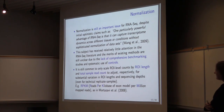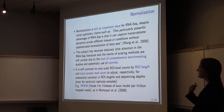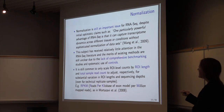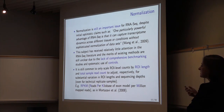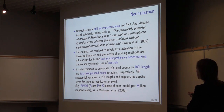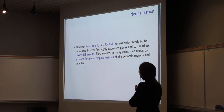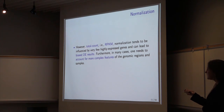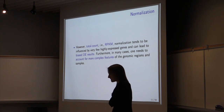This is still a very important issue, despite initial optimistic claims, like in a 2009 paper stating that one powerful advantage of RNA-seq is that it can capture transcriptome dynamics without sophisticated normalization. This subject has received relatively low attention, and the merits of various methods proposed are still unclear due to the lack of comprehensive benchmarking studies and systematic use of control samples or sequences. It's still common to use RPKM — reads per kilobase of exon model per million mapped reads — which normalizes by total read count and length. Although RPKM or total count normalization are very problematic and can lead to biased differential expression results, they're affected by very few highly expressed genes.